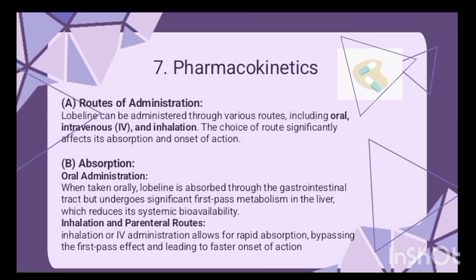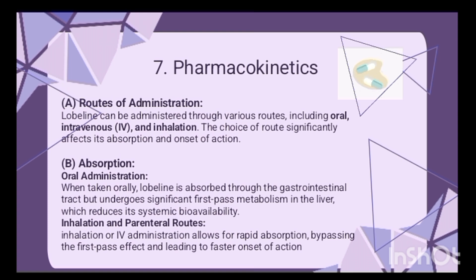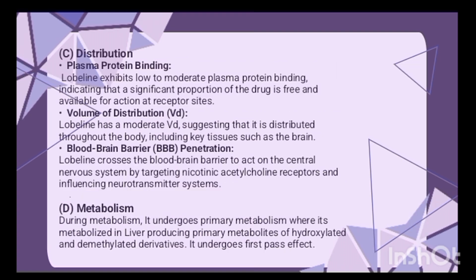Pharmacokinetics — in simple words, what happens with the drug in the body — includes route of administration, absorption, distribution, metabolism, and excretion. For Lobeline, various routes such as oral, IV, and inhalation are used, selected based on conditions. When taken orally it absorbs from the gastrointestinal tract, while IV or inhalation allows rapid absorption and bypasses the first-pass effect.